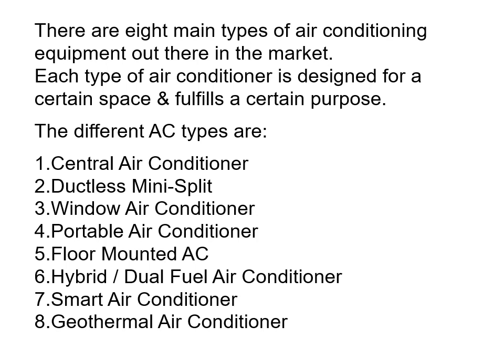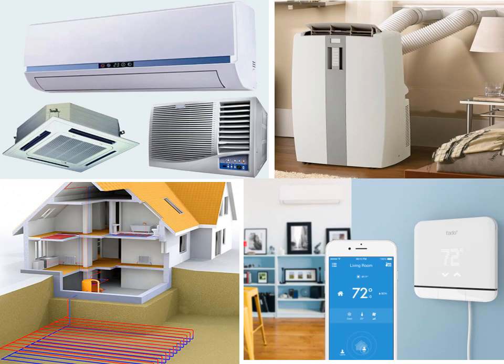There are various types of air conditioning equipment available in the market, each designed for a certain space and purpose. The different AC types are: central air conditioner, ductless mini-split, window air conditioner, portable air conditioner, floor-mounted AC, hybrid or dual fuel air conditioner, smart air conditioner, and geothermal air conditioner. We can see different types used in domestic and commercial buildings in this slide.